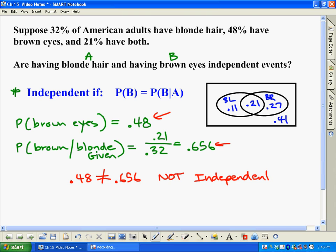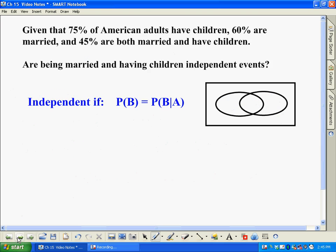So you might be asking yourself right now, what would independent events look like? So I have an example of that as well here. So here's a different one. We have 75% of American adults have children, 60% are married, and then 45% are both married and have children. So if we have children over here, if we have married over here for our Venn diagram here, both would be 45%.